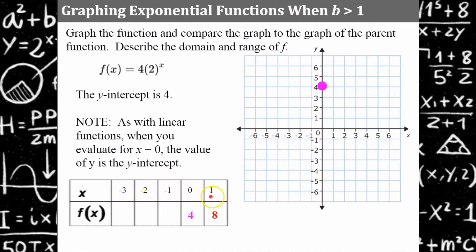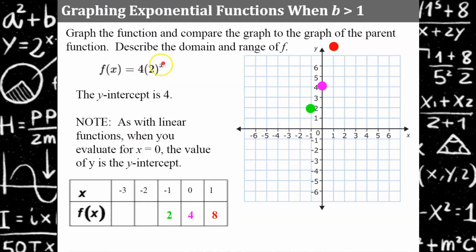You can pick any numbers you want in the table. When x equals 1, 2 to the first is 2 times 4 is 8. For x equals negative 1, 2 to the negative 1 is one-half, and 4 times one-half is 2. For x equals negative 2, 2 to the negative 2 is one-fourth, and 4 times one-fourth is 1. For x equals negative 3, y is one-half. It just keeps getting smaller and smaller.